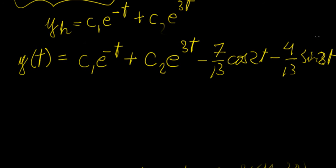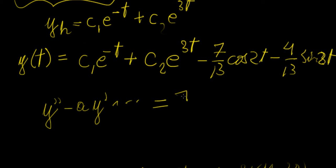So that's essentially how you would solve it. Now, what happens when you have a differential equation whose right-hand side is a sum of different functions — for example, an exponential plus a trigonometric function plus a polynomial? In that case, we apply the same method but use a superposition of all those solutions together, and that's what we're going to cover in the next video.